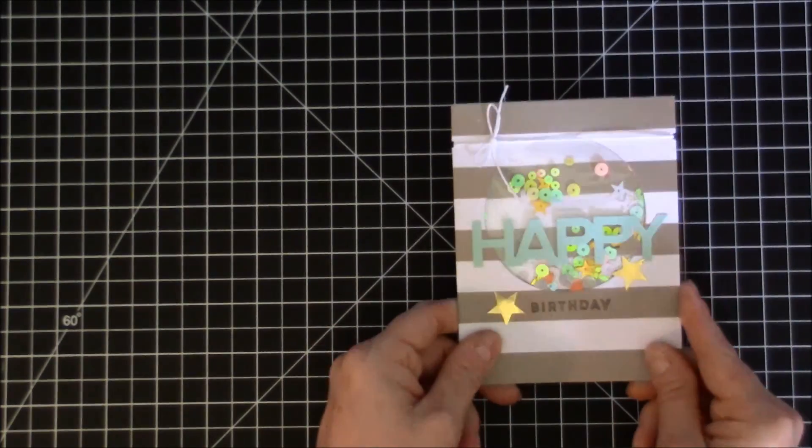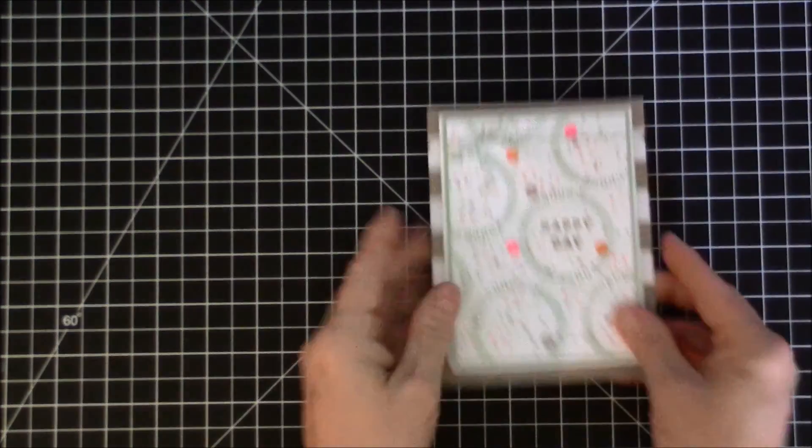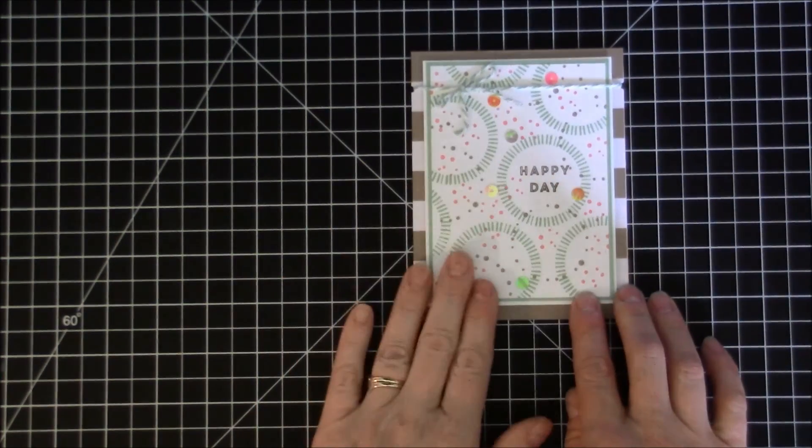So that was my third card. My fourth card, I used the stamp set, more of the things in the stamp set to make this type of confetti pattern.